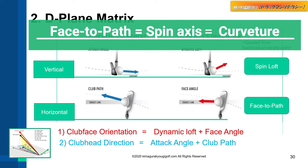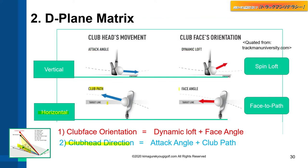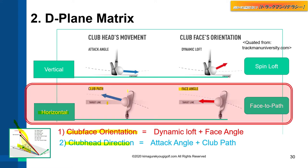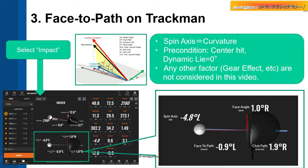We focus on the curvature of the ball in this video, so we take a look at the horizontal component of the D-plane. The club path is the horizontal angle of this blue arrow — club head direction — and the face angle is the horizontal angle of this red arrow — club face orientation. The difference between those arrows is the face-to-path. Face-to-path on TrackMan.